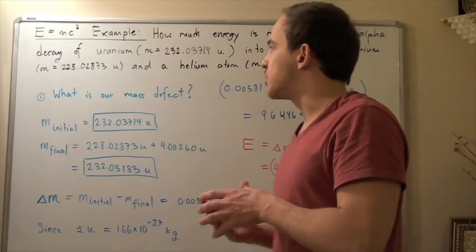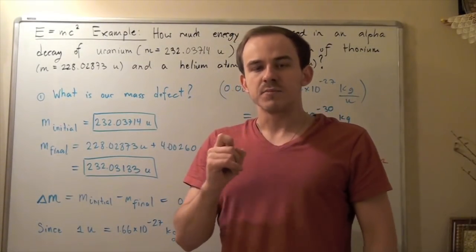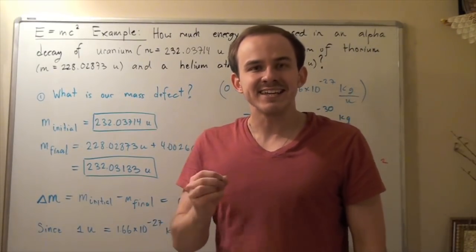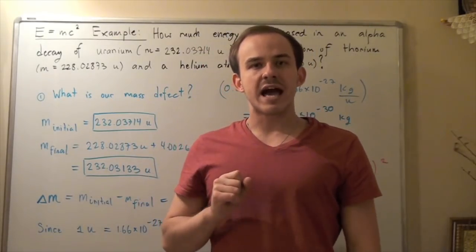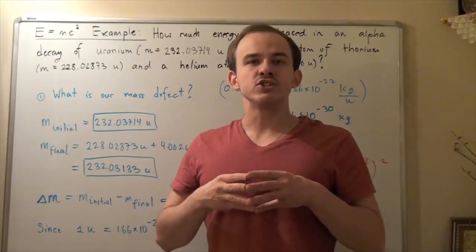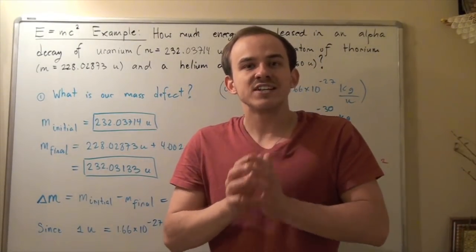This is our reaction. Initially, we have one uranium atom, and then that uranium atom spontaneously decays. Its nucleus breaks down into two different atoms. It breaks down into a helium atom and a thorium atom, and some energy is released.